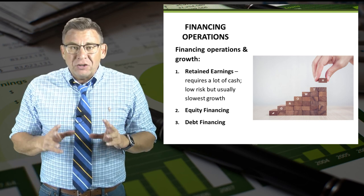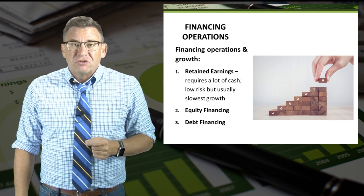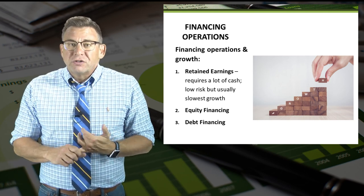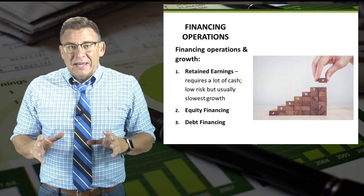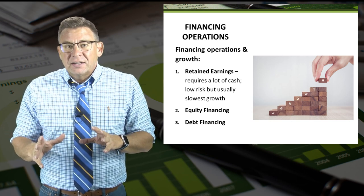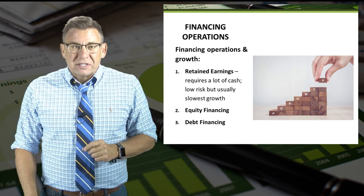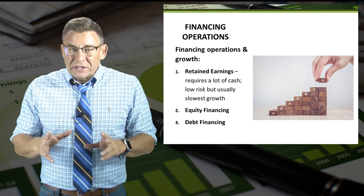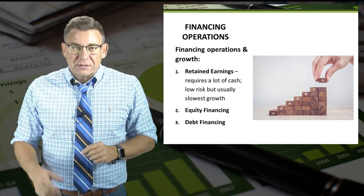So there are three general ways to finance operations and growth. The first is through the use of retained earnings. If a company has enough cash on hand, it can use it to expand and grow the business. This is a low risk approach to growth, but often the slowest.